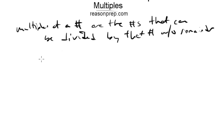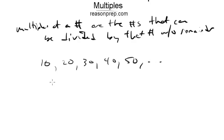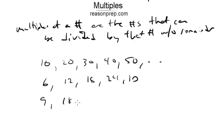Let's say 10. What are the multiples of 10? Well, the multiples of 10 would be 20, 30, 40, 50, and so on. How about the multiples of 6? 6, 12, 18, 24, 30. How about of 9? 9, 18, 27, 36, 45, and so on.